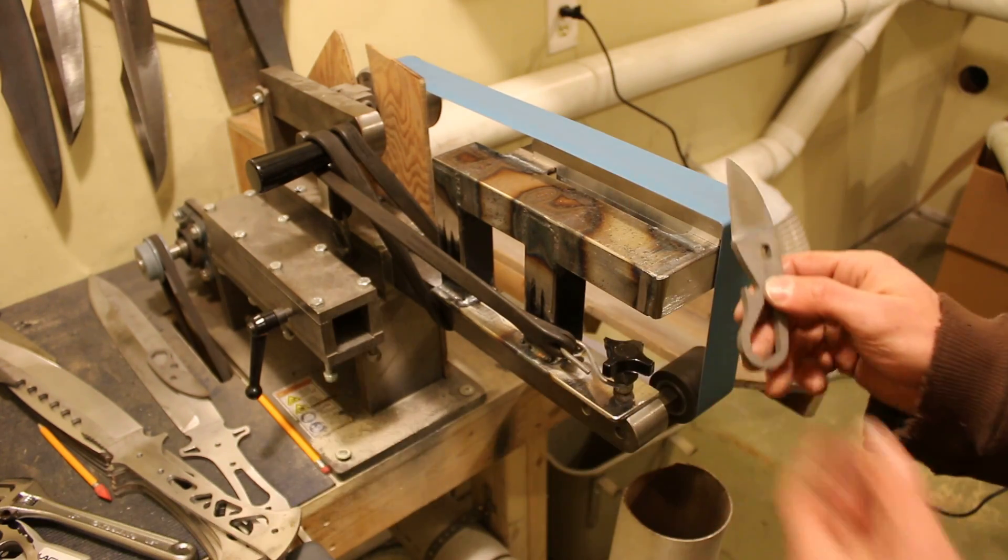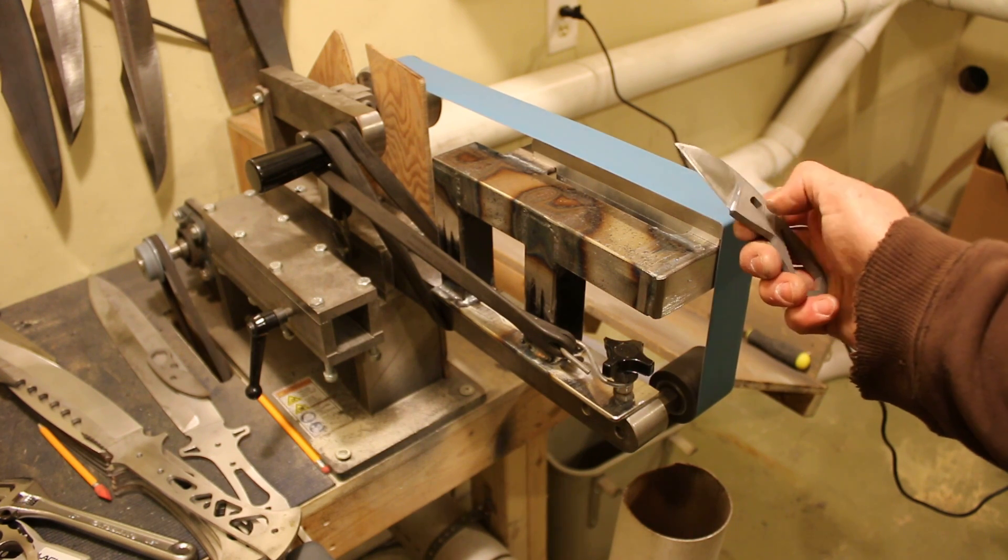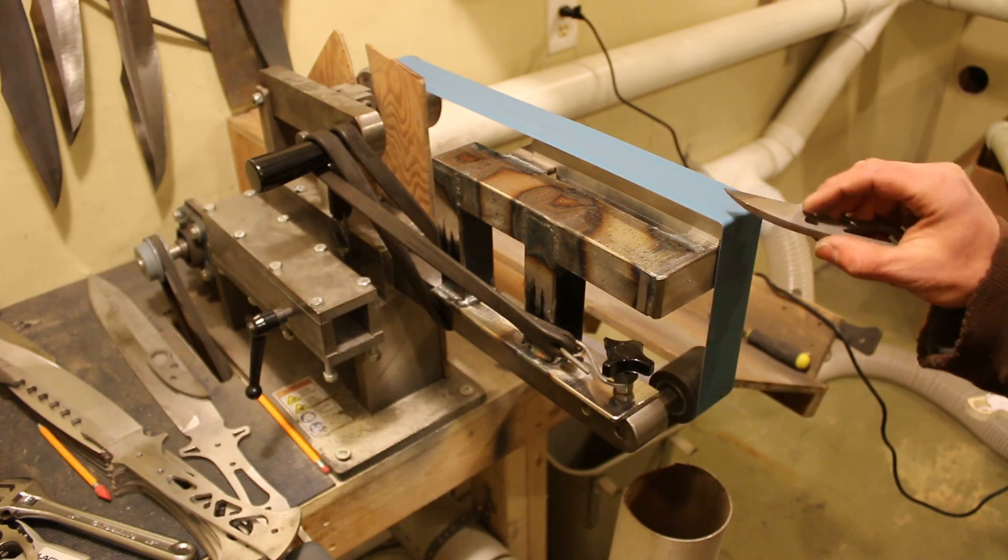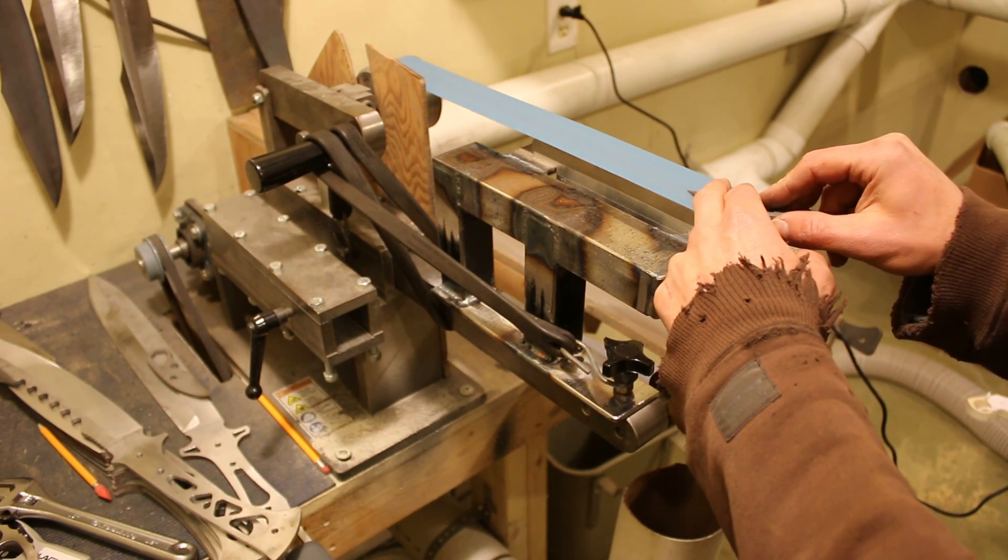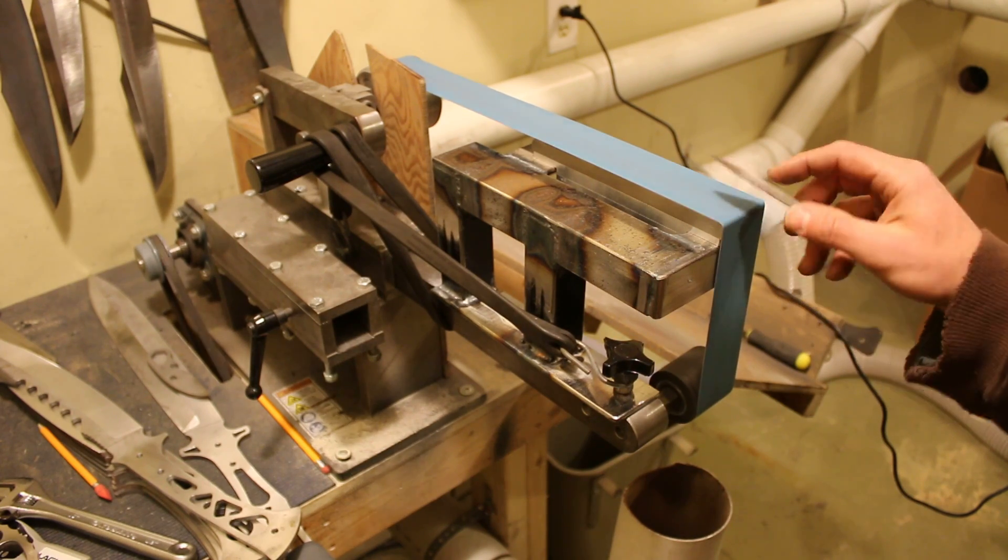The whole purpose of this is to take a knife blade that's already been ground and clean up the plunge cutter. Like so. And that's how this whole thing works.